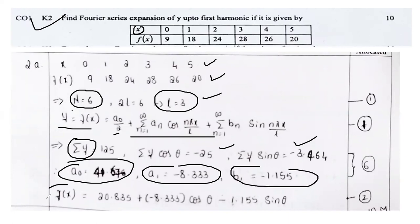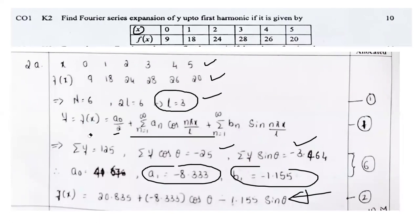Then substitute everything. f(x) equals a0 by 2. What is a0? 41.67 divided by 2. a1 equals minus 8 point something. Substitute accordingly. This is your ultimate result — please note the ultimate result. Theta and all, keep as it is, no issues. This is the way to proceed for this particular problem. Hope it is very clear to everybody.